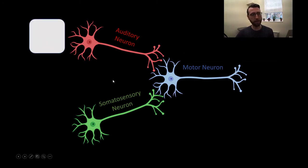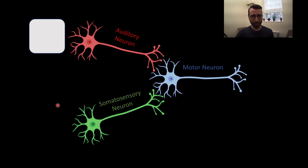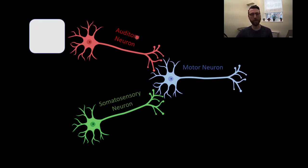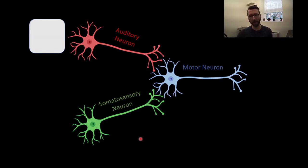Let's look at this a slightly different way with some flashy animations. Up here we've got our auditory neuron in red and our somatosensory neuron in green. The auditory neuron represents the predictive tone — the CS — and the somatosensory neuron in green represents the air puff somatosensory US, the aversive event that's going to motivate the response.